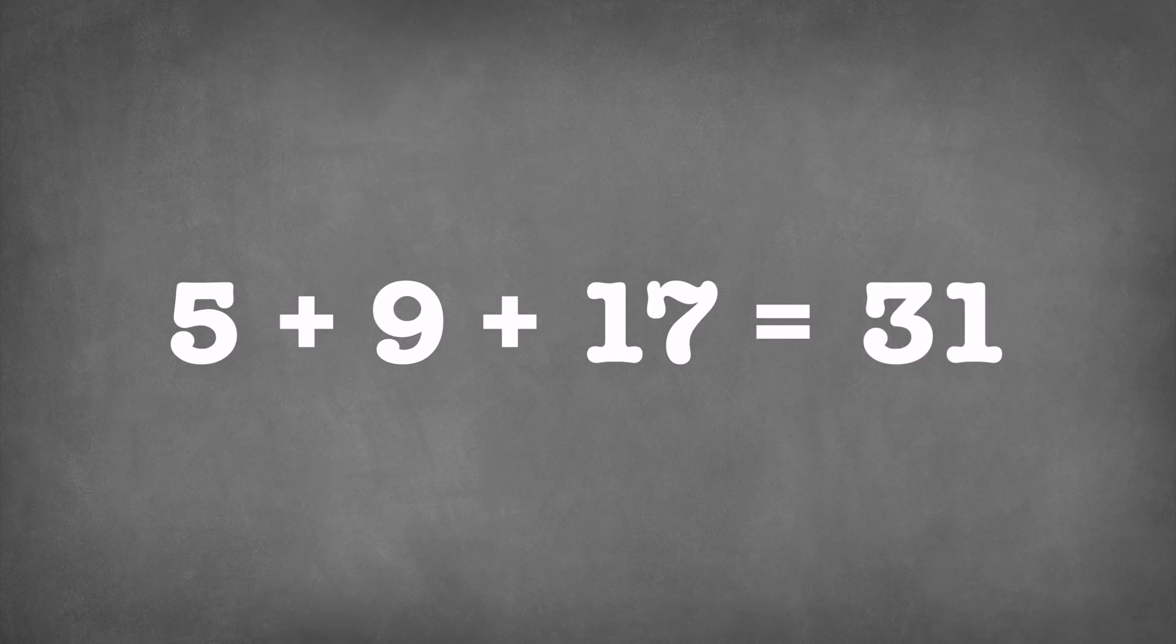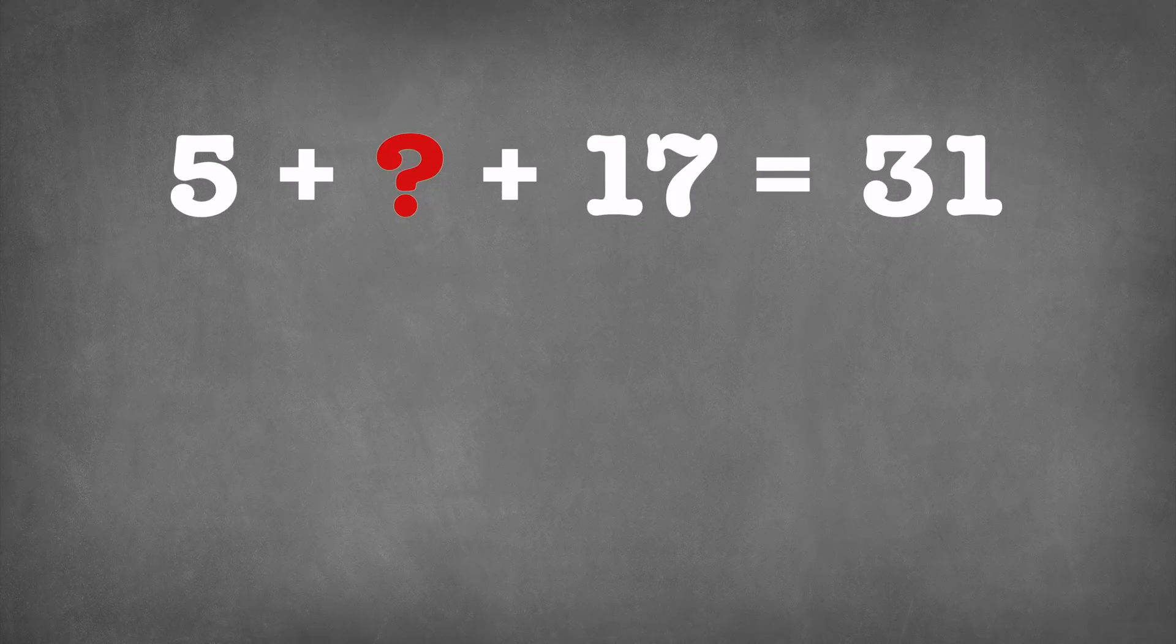Simple. Imagine you want to store three digits: 5, 9, and 17. And that you want to be able to recover all three of them, even if one of them can't be read. To do that, you can store the sum of all three of them as well. Now when the number 9 gets corrupted, you can recalculate it by subtracting the numbers from the sum.